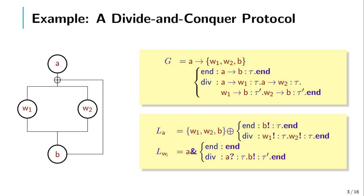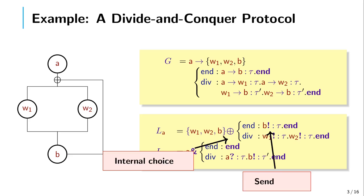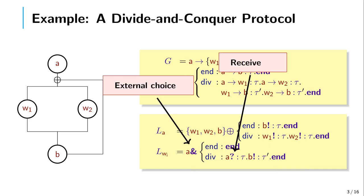At the local type level, this is as follows. For participant a, what we have is an internal choice: a will send to w1, w2, and b either label end or div. If a sends end, it will send something of type t to b; otherwise it will send something of type t to w1 and w2. For the wi, this is an external choice, meaning receiving from a either label end or div. If we receive label end, the protocol will finish for participant wi. If we receive div, we will receive something of type t from a and will send to b something of type t prime, and then our part in the protocol will be finished.